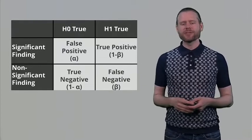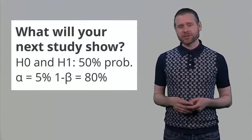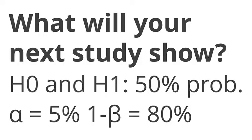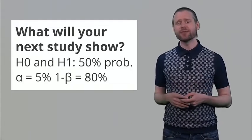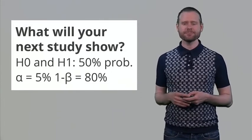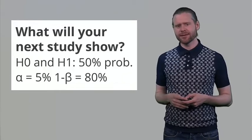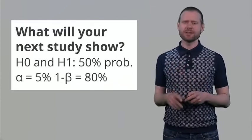Now let's take this understanding of type 1 and type 2 errors and true positives and true negatives to think about what is most likely to happen in your next study. I will describe a typical situation which I think is fair and describes many of the studies that we do. Let's say you don't really know if there is a true effect or not — the null hypothesis might be true, the alternative hypothesis might be true, and both are equally likely. Let's give them both 50%. We will use a type 1 error rate, an alpha of 5%, and we will aim for statistical power of 80%, which means a type 2 error rate of 20%. You have 80% power in your next study.